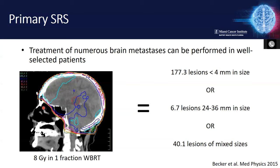From a technology standpoint with our gamma knife platform, we could theoretically treat 177 lesions less than four millimeters, about seven lesions between 2.5 and 3.5 centimeters, or about 40 mixed-size lesions before reaching a whole-brain-equivalent dose. This is not a clinical recommendation, but it illustrates that our technology allows treatment of patients with multiple brain metastases. A retrospective study was then put together to look at outcomes for these patients.